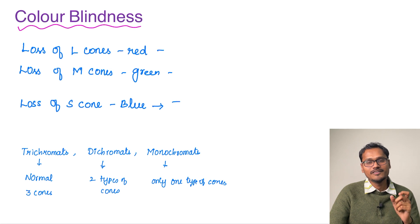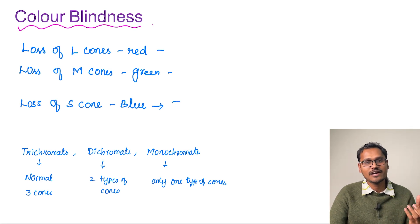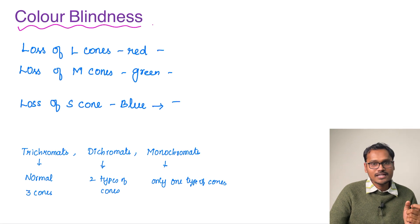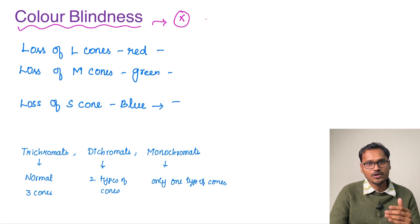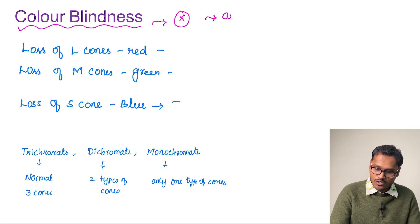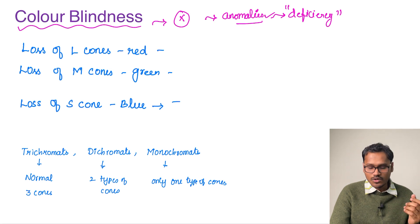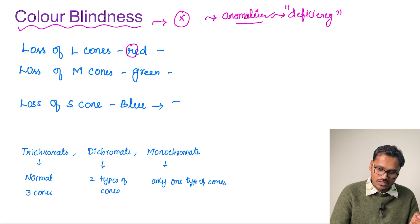Regarding color blindness, women generally have better color perception than men, and this has a genetic basis. Color blindness is mostly linked to the X chromosome, and since men have only one X chromosome, a deficiency in that chromosome can result in color blindness. Color blindness is usually referred to as an anomaly rather than complete color blindness. Loss of L cones, meaning red color perception, is called protan anomaly.